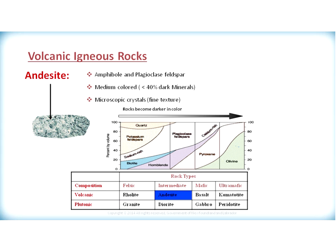The second rock we will look at is andesite. Andesite is more of an intermediate composition. It contains the minerals amphibole and plagioclase feldspar. It is medium-colored and can contain up to 40% dark minerals. Again, it has a microscopic crystalline structure, so we cannot see the minerals with the naked eye, and hence it has a fine texture.